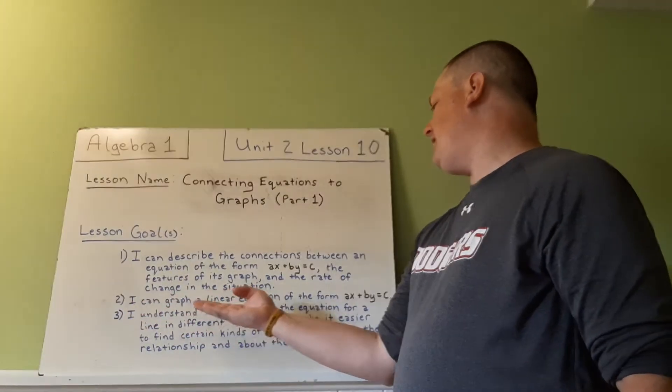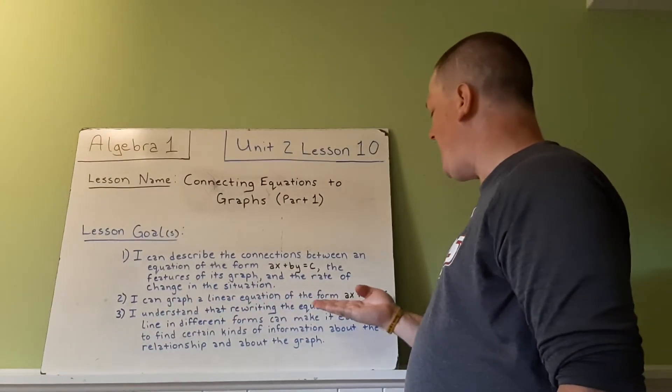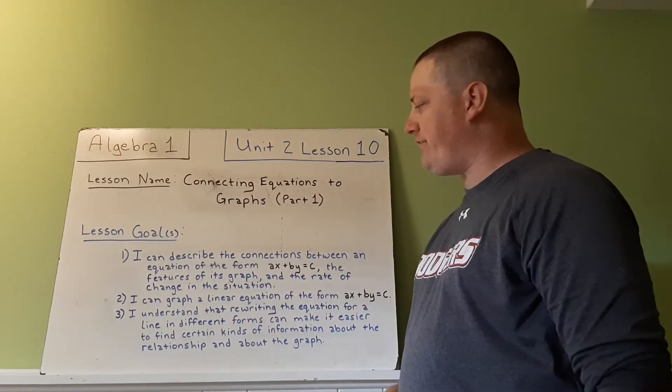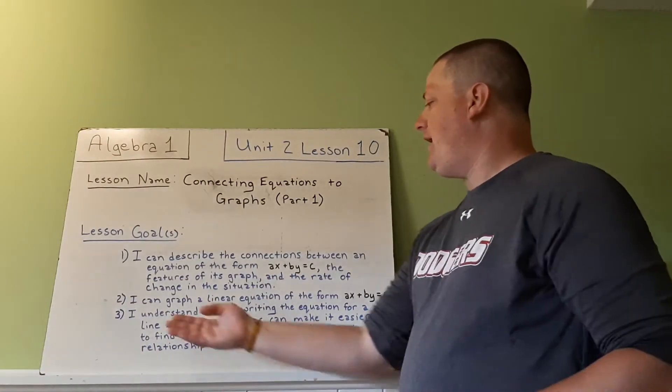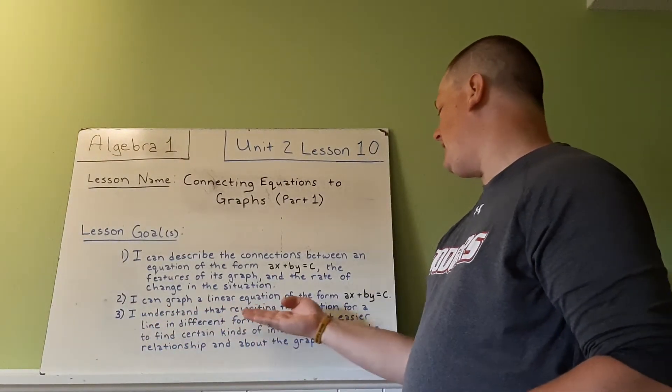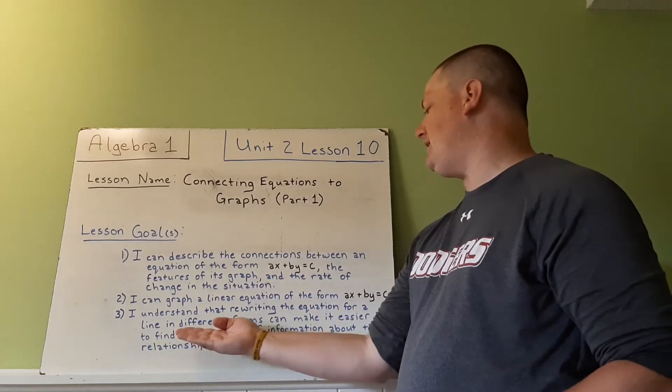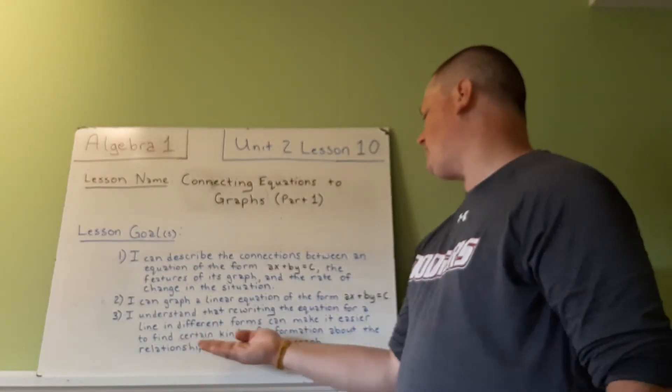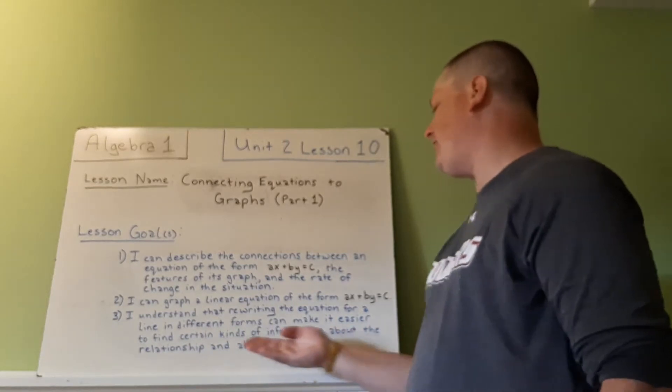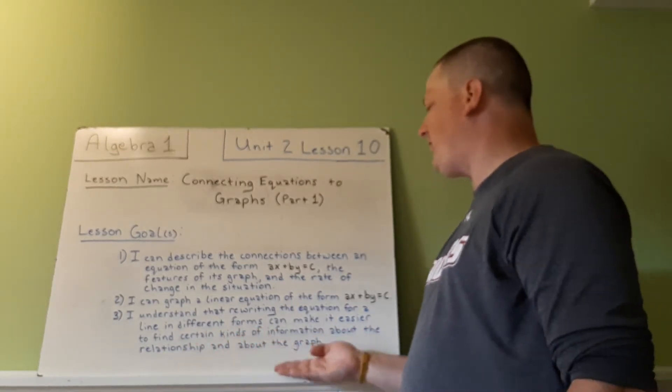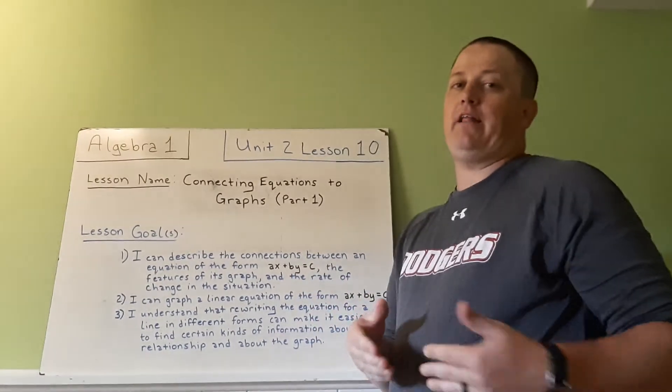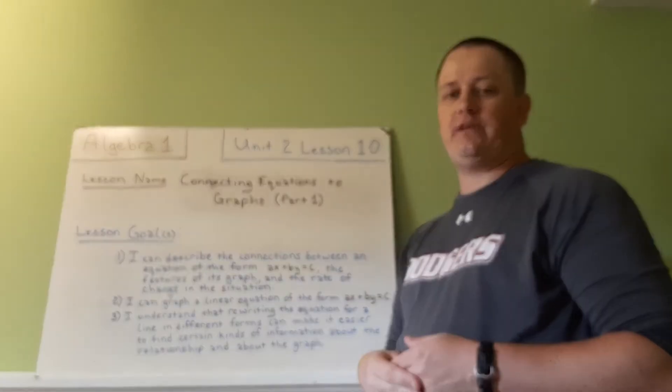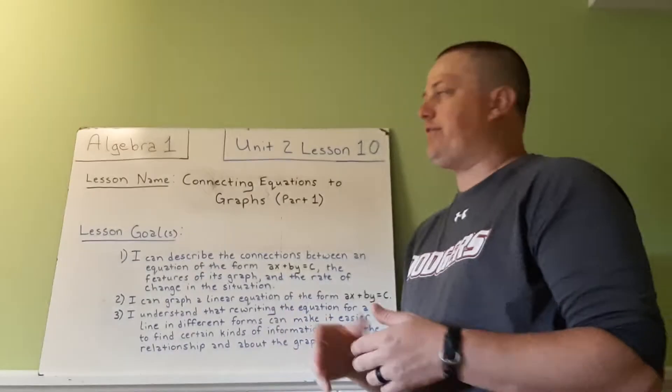I can graph a linear equation of the form ax plus by equals c. So just looking at, are you capable of graphing it? And I understand that rewriting the equation for a line in different forms can make it easier to find certain kinds of information about the relationship and about the graph. Just by rearranging the problem, we can find the horizontal or the vertical intercept a little bit easier.